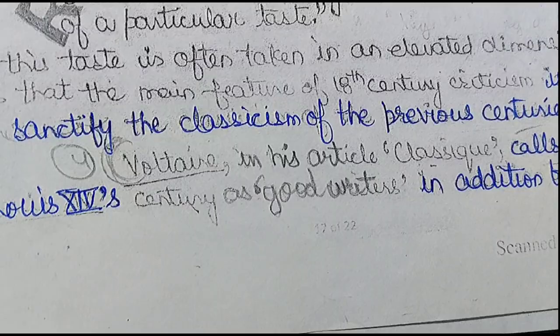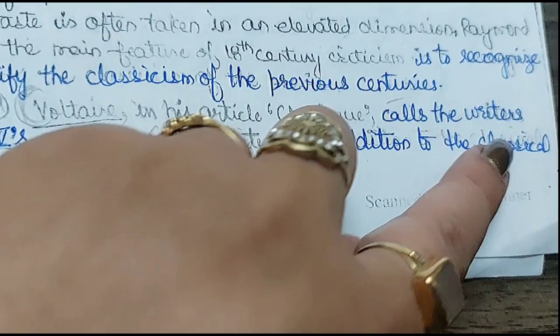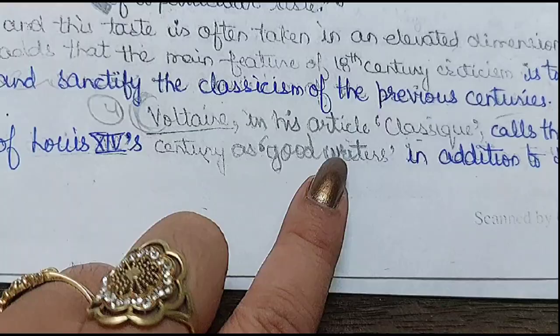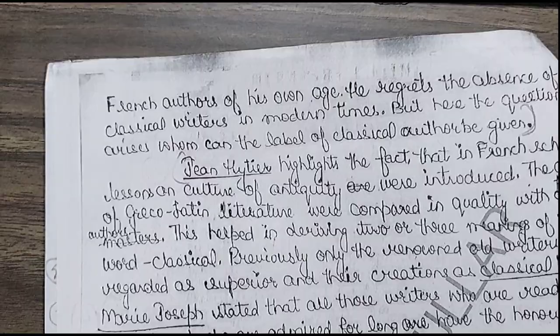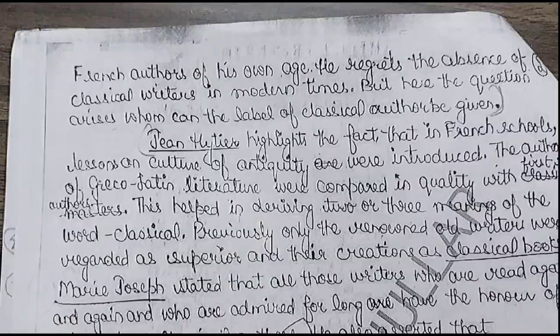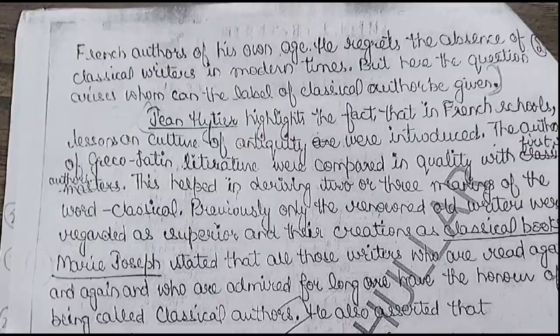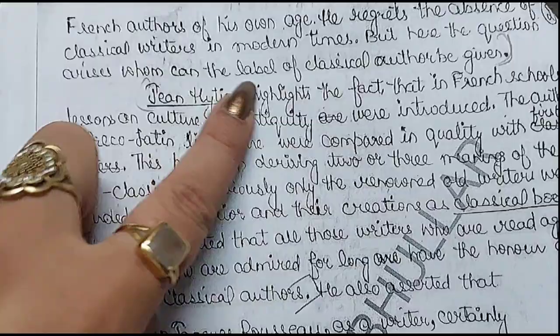Voltaire says in his article 'Classique' that he calls the writers of Louis XIV's century good writers as well, in addition to the classical French authors of his age. So writers of the 17th century were also written in their own right. Here is the question: if it was the 17th century and classicism was the same, then whom can the label of 'classical writers' be given?